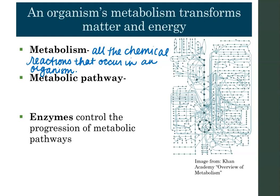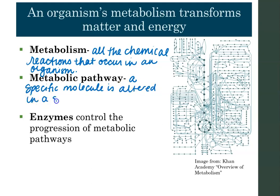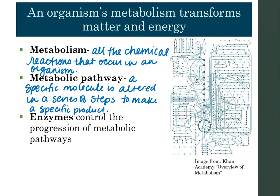Metabolism is all the chemical reactions that occur in an organism. Each of those metabolic reactions is part of a larger metabolic pathway — a series of steps that modifies, adjusts, or transforms a particular molecule in a cell. In a metabolic pathway, a specific molecule is altered in a series of steps to make a specific product. That product is not just going to accumulate in the cell — it's going to be used immediately as part of another metabolic pathway.